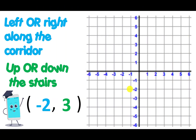Moving on to finding coordinates in all four quadrants, it's very similar. We still go along the x-axis first, and the second coordinate is still the y-axis, but this time when we go along our corridor, we could go left or we could go right. And when we go up the y-axis, we can also go down the y-axis now. So we're still going along the corridor — when you walk along the corridor, it's not a one-way system, you could go left or right. And when you have stairs, it's also not one-way; you can go up or down. So you can still use along the corridor first and then use the stairs second.